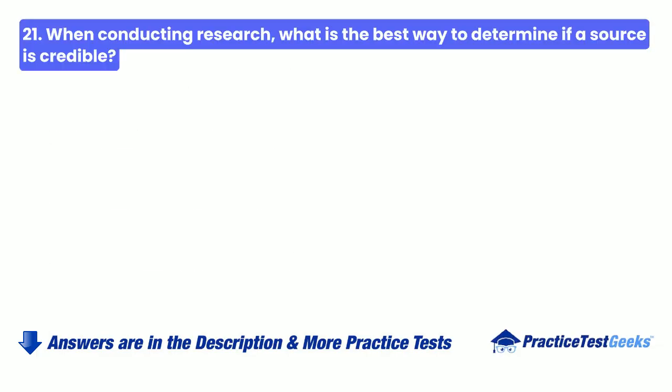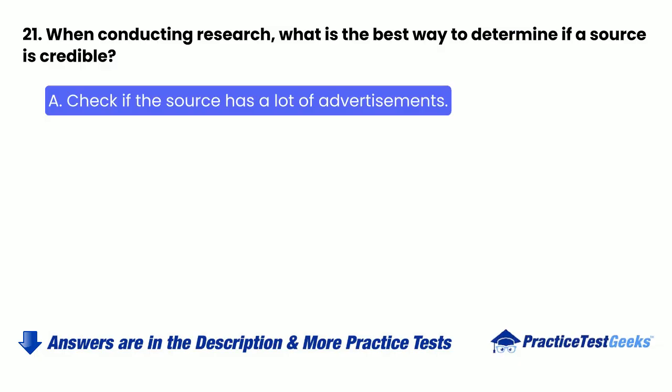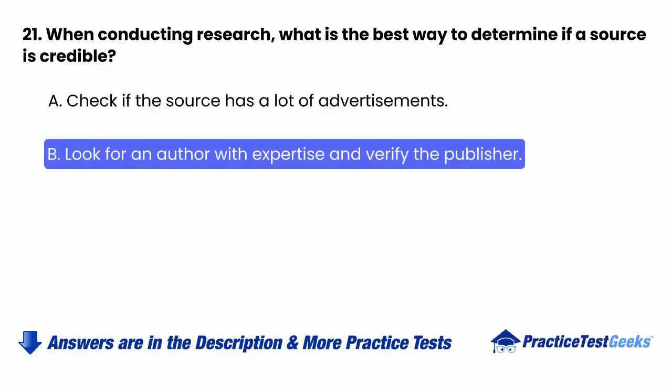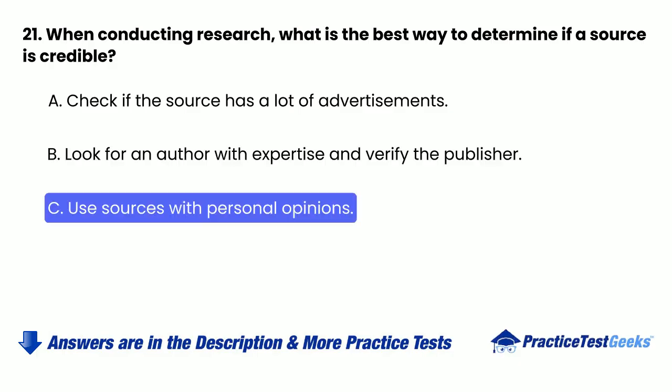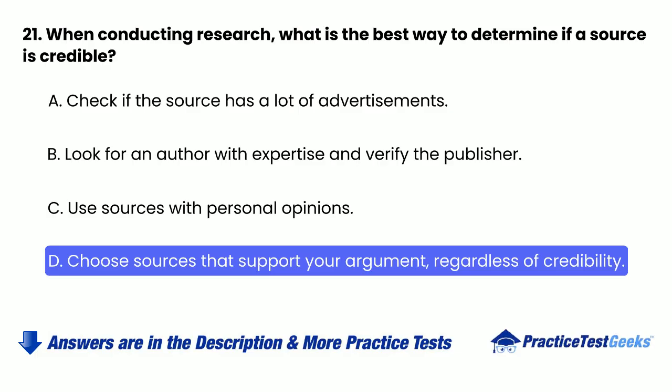21. When conducting research, what is the best way to determine if a source is credible? A. Check if the source has a lot of advertisements. B. Look for an author with expertise and verify the publisher. C. Use sources with personal opinions. D. Choose sources that support your argument, regardless of credibility.